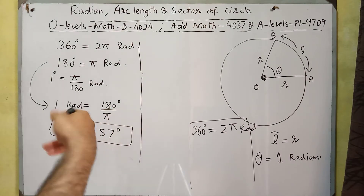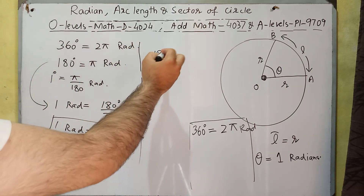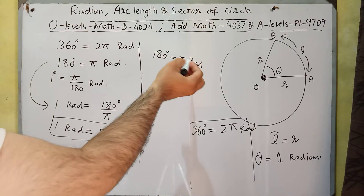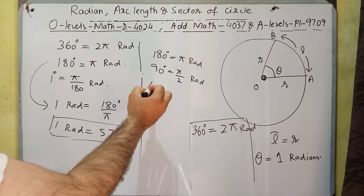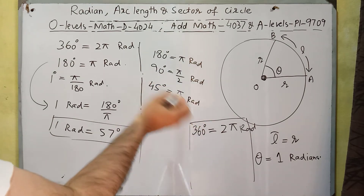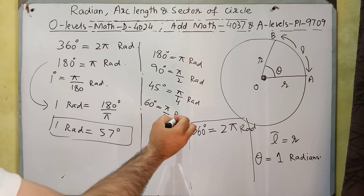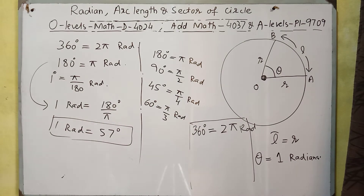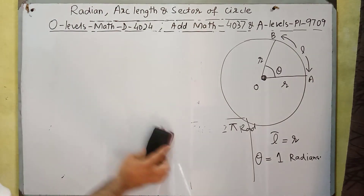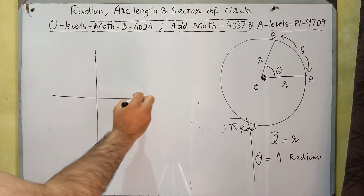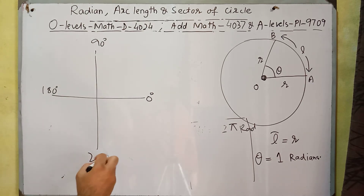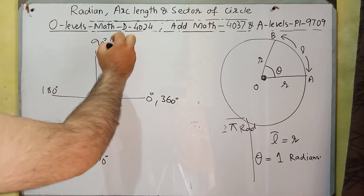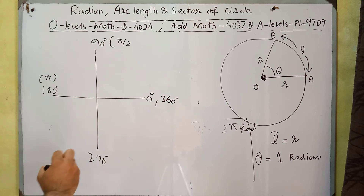Since 180 degrees equals π radians, we can say that 90 degrees equals π/2 radians, 45 degrees equals π/4 radians, and 60 degrees equals π/3 radians. In a coordinate system we have angles 0, 90, 180, 270, and 360 degrees. In radians, these correspond to 0, π/2, π, 3π/2, and 2π respectively.